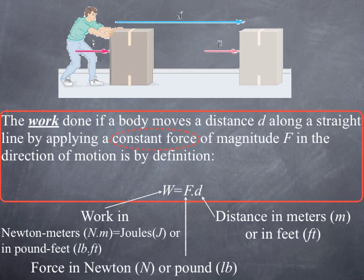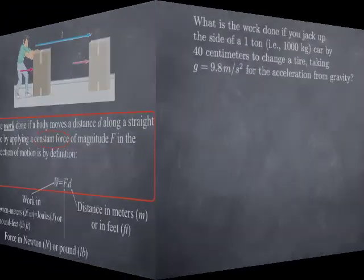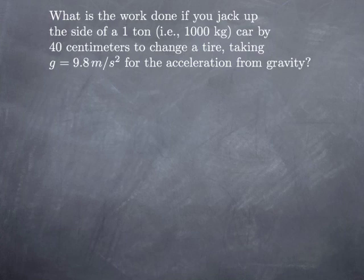Remember that this is in the case where the force is constant. In particular that means essentially constant acceleration. So to look at an example, let's see what's the work done if you jack up the side of a 1000 kg car by 40 cm to change a tire. We're going to take 9.8 m/s² for the acceleration from gravity.